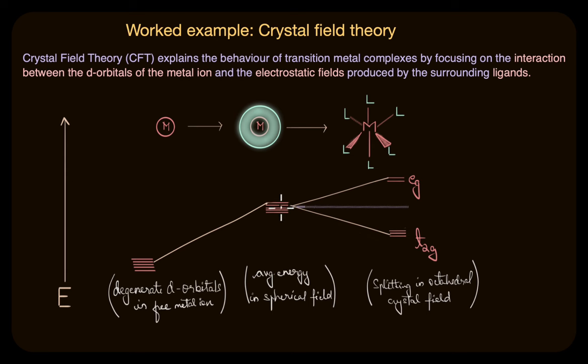When we say the degeneracy is lost, it basically means that the d-orbitals split into two different energy levels: the lower t2g energy set with three orbitals dxy, dyz, and dxz, and the higher energy set with two orbitals dx² - y² and dz². This energy difference between these two sets of orbitals is called the crystal field splitting energy, represented by Δ₀. The extent of this splitting depends entirely on the nature of the ligand.